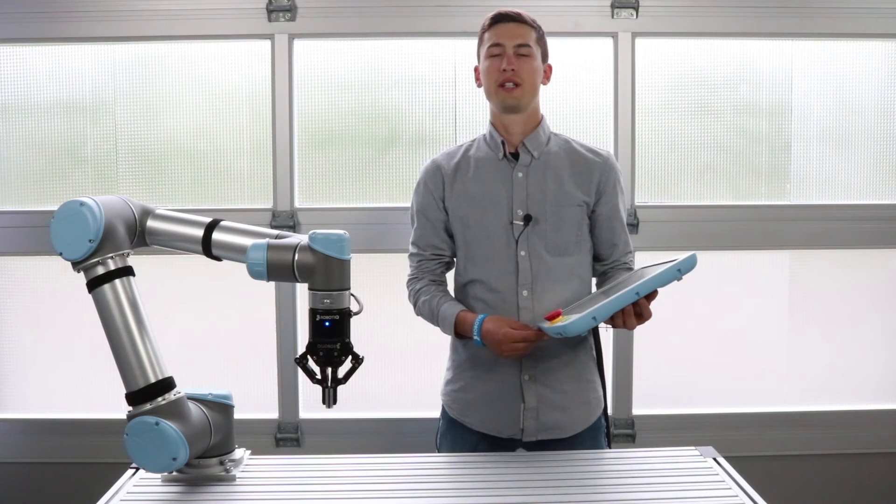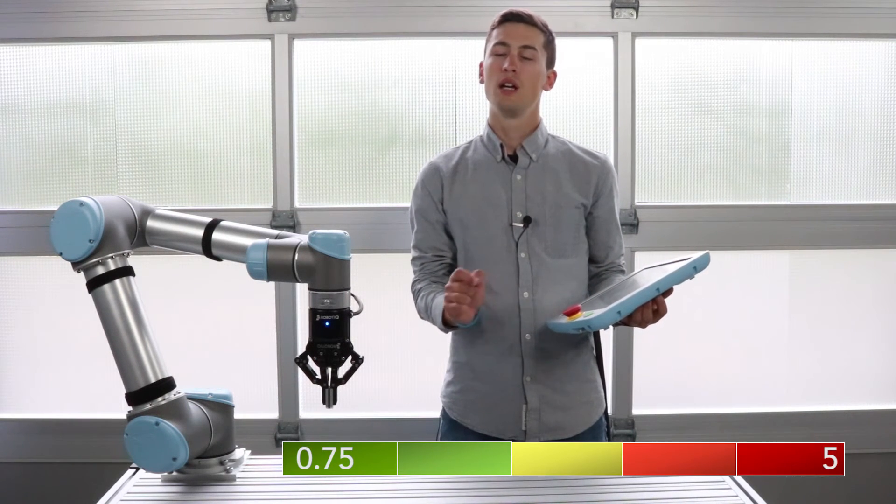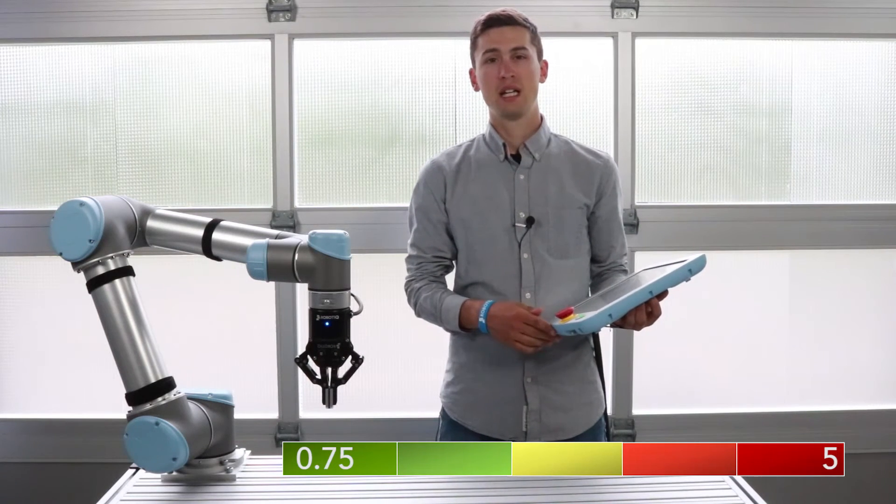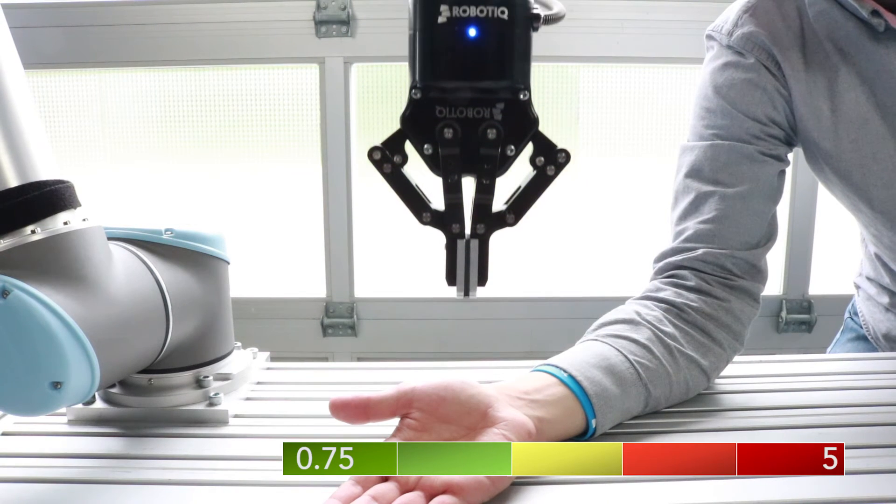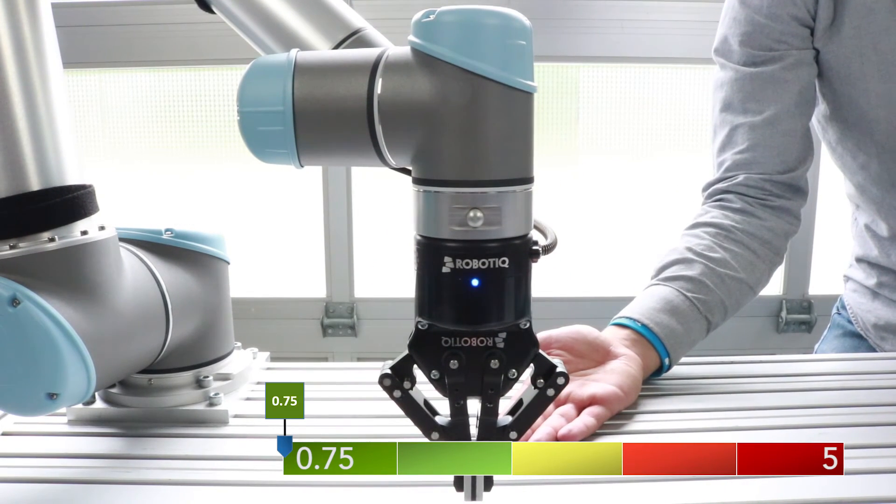The third criterion is possibility of avoidance, rated from possible being 0.75 to impossible being 5. In this case, the robot is not moving fast enough to crush me instantly, so it is possible to avoid the impact.